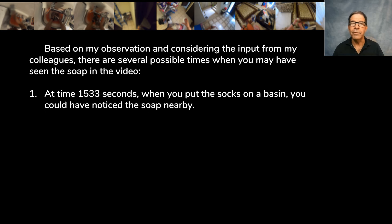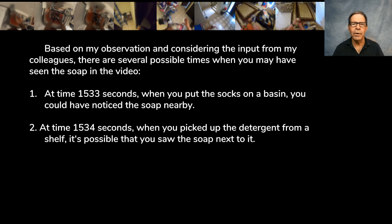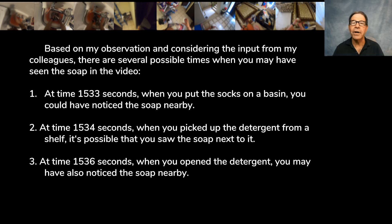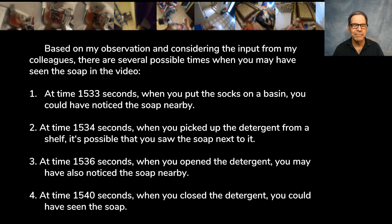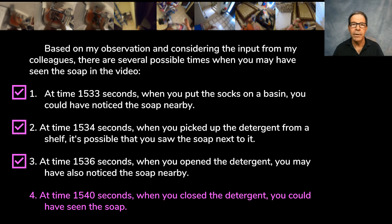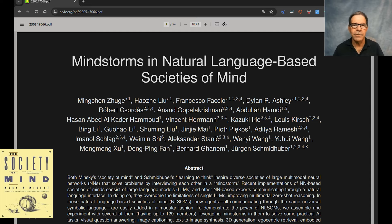Who knew a computer could tackle a problem like that? The four GPTs discuss the situation with each other, and then a fifth GPT acts as a moderator. The answer comes back like this: based on observation and input from colleagues, several possible times are identified — at time 1533, when the socks were put on the basin, the soap could have been noticed nearby; at time 1534, when the detergent was picked up from the shelf, the soap may have been seen next to it; at time 1536, when the detergent was opened, soap nearby may have been noticed; and at time 1540, when the detergent was closed, the soap could have been seen.